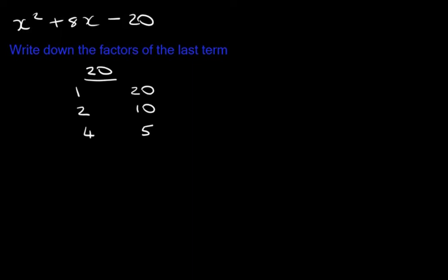When we multiply these pairs - 1 and 20, 2 and 10, 4 and 5 - we need to get 20. But when we add or subtract them, we need to get the middle term. So whatever our answer is here in terms of multiplication, we must get the last term. But when we add or subtract, it needs to add up to the middle term. So which of these pairs will add up to the middle term?